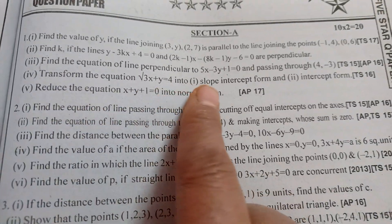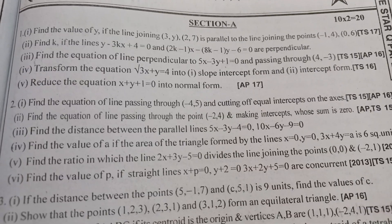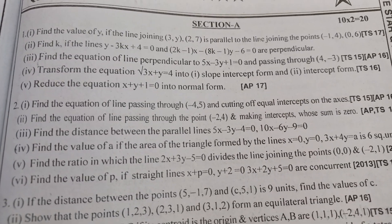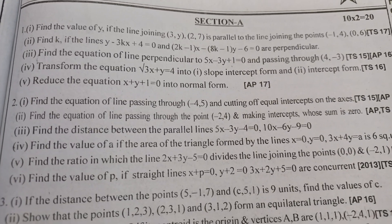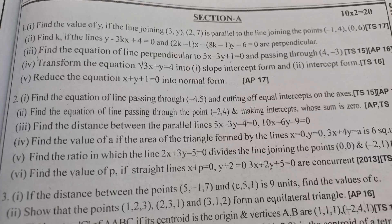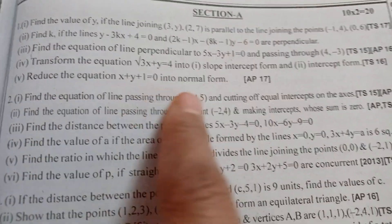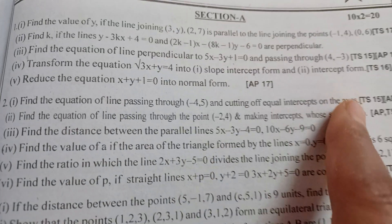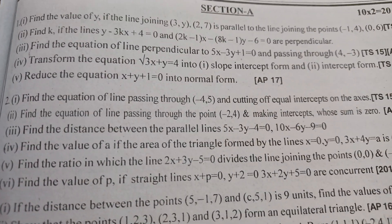Find the value of y: joining points (3, y) and (2, 7) is parallel to the line joining the given points — find y. Next, find the k value for perpendicular lines. Next, find the equation of the line perpendicular to the given line and passing through the given point. Transform equation is most important — fourth one. Here we have an equation in slope intercept form and intercept form.